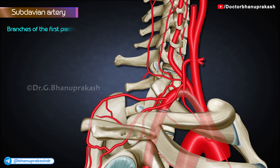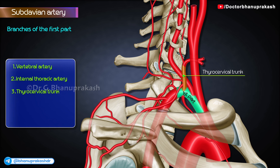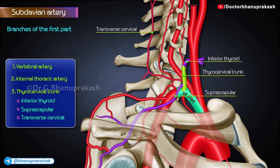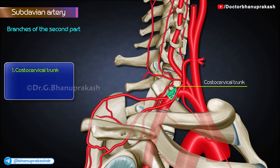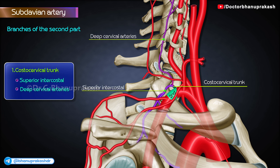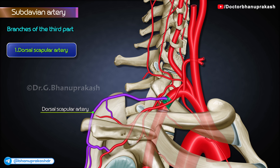Branches. From the first part: vertebral artery, internal thoracic artery, and thyrocervical trunk which divides into three branches — inferior thyroid, suprascapular, and transverse cervical arteries. The costocervical trunk comes from the second part and divides into two branches: superior intercostal and deep cervical arteries. From the third part: dorsal scapular artery, occasionally.